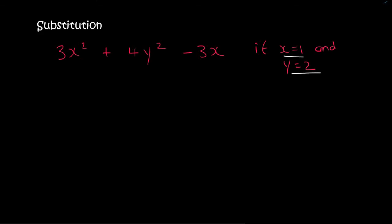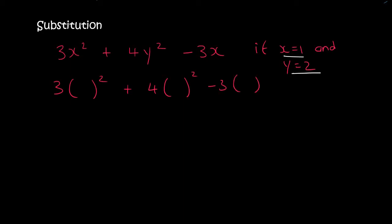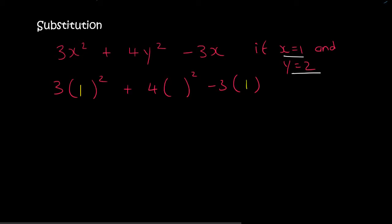So what you do is you write everything down. Notice that wherever you see an x and a y, you use a bracket, and then you just put the numbers into the bracket. So x goes there and x goes over there, and then the y value is 2, so that goes over there.